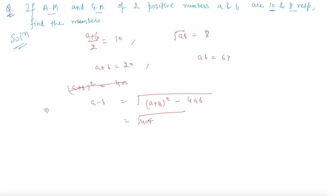Or without using this formula, I can directly find out A minus B, which is (A+B)² minus 4AB. (A+B)² is 400, 4 times 64 is 256, so that will be 400 minus 256, which is plus or minus 12. A minus B we are getting as plus or minus 12.